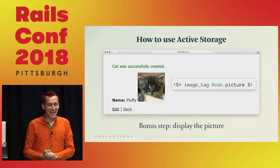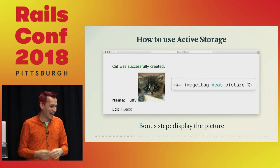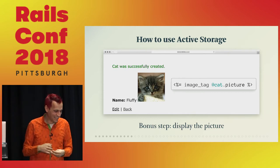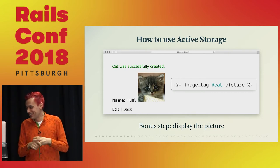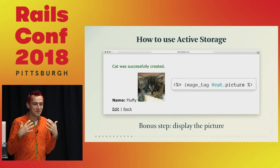The last step — in the Cat model we have to add a single line of code: 'has_one_attached :picture'. That's it, that's literally all you have to do. If you do all of this, then you have this form, people can upload the picture, the picture gets uploaded and gets attached to the cat. On a show page you can just do image_tag(cat.picture) and that's going to display the picture right there.